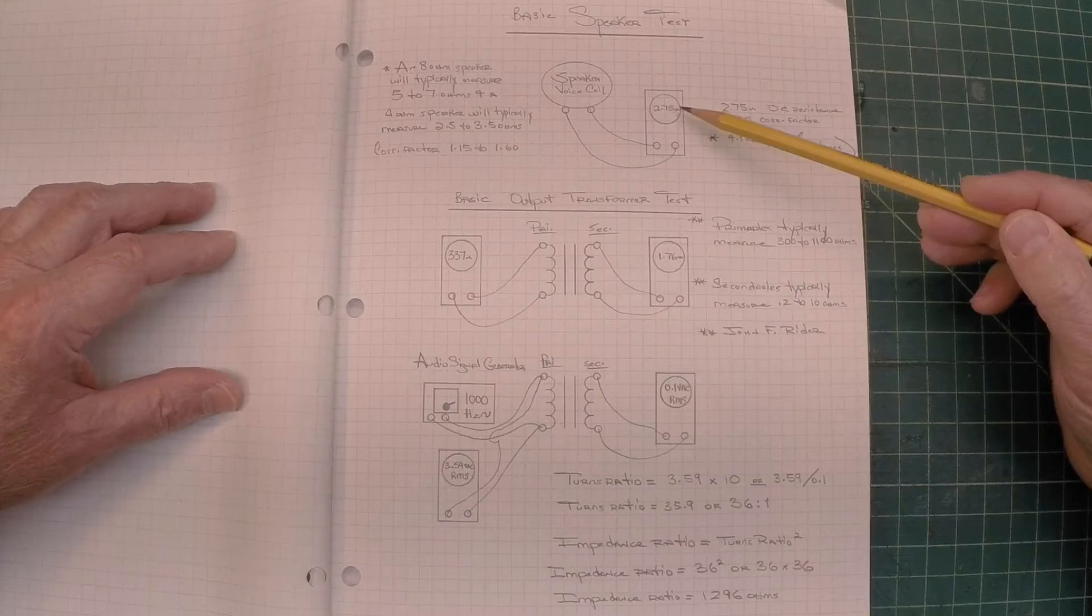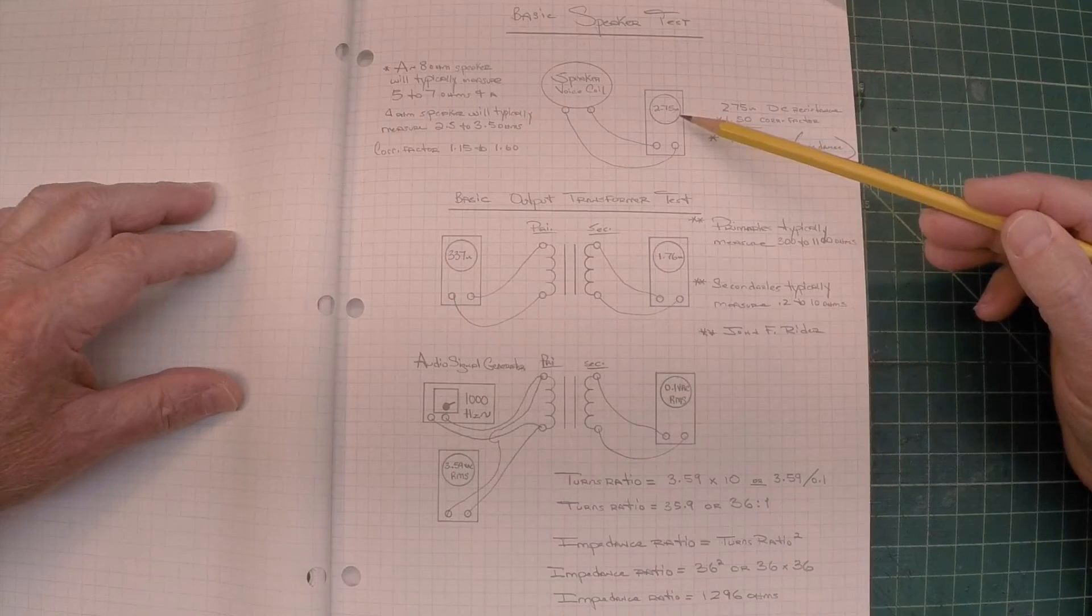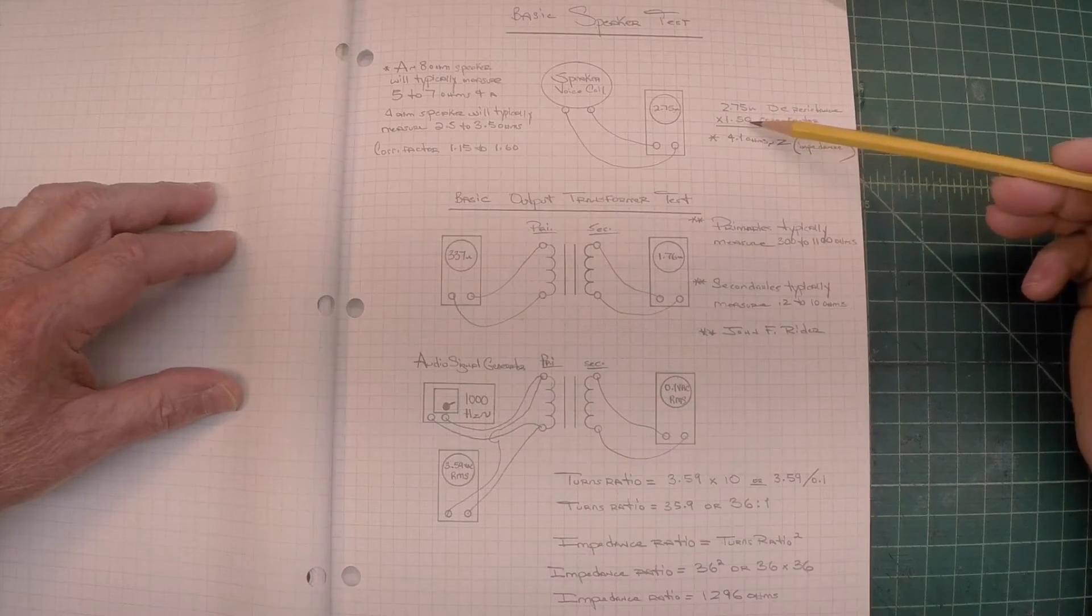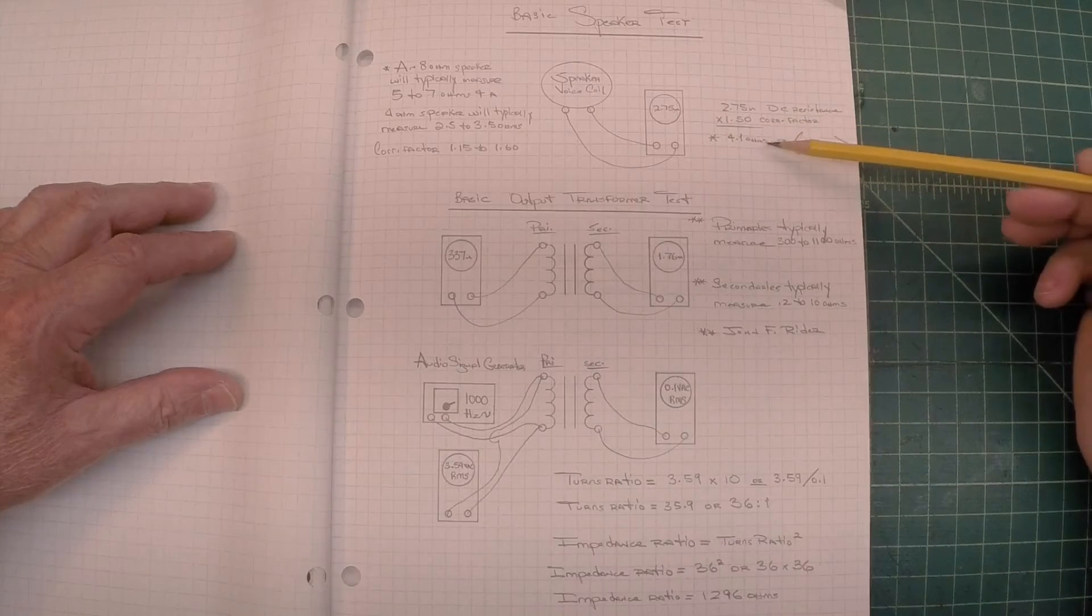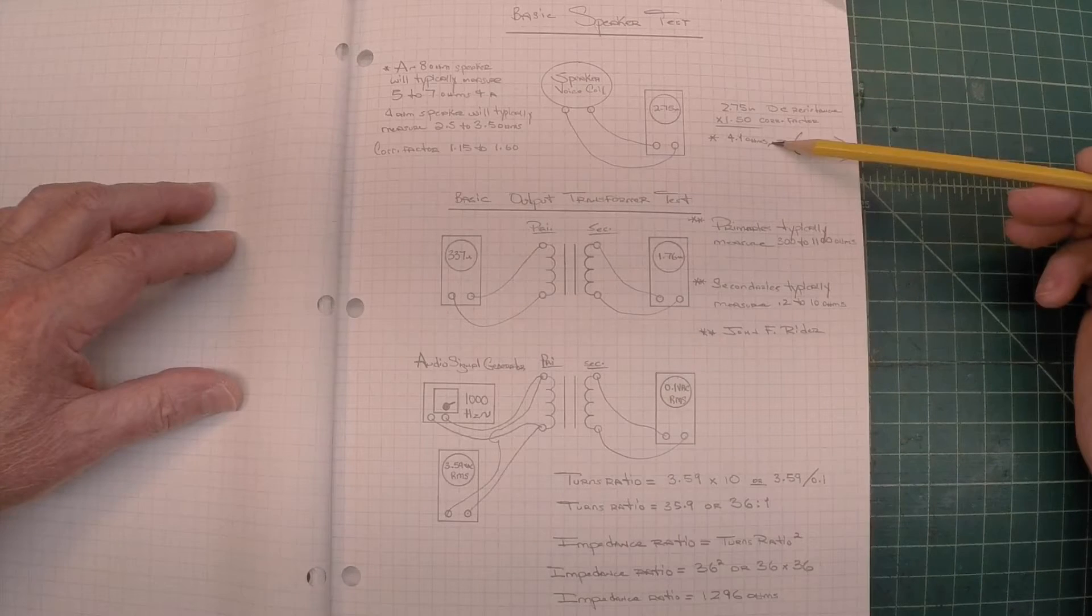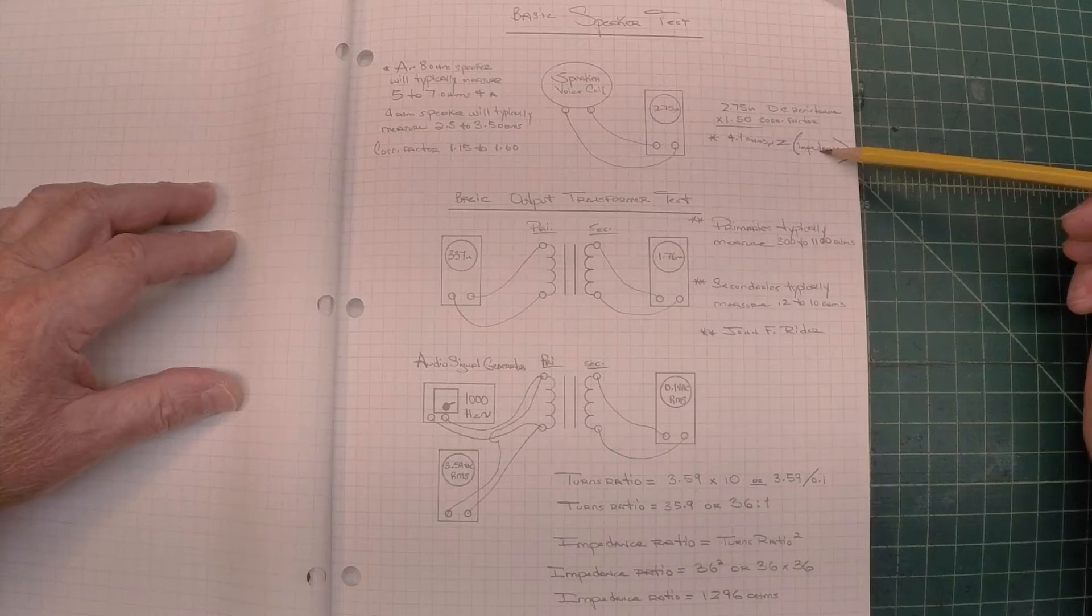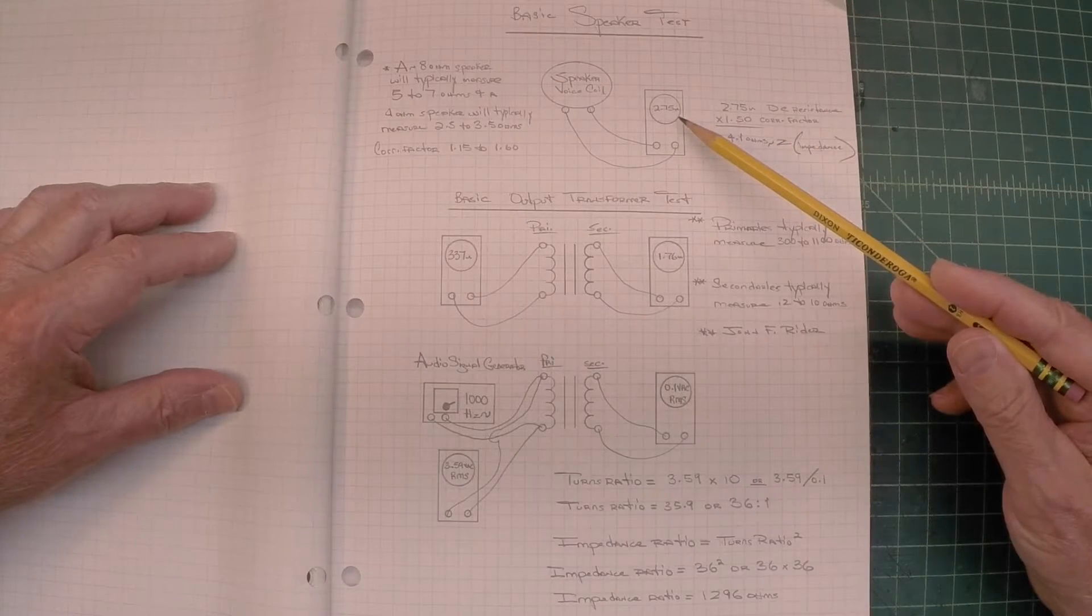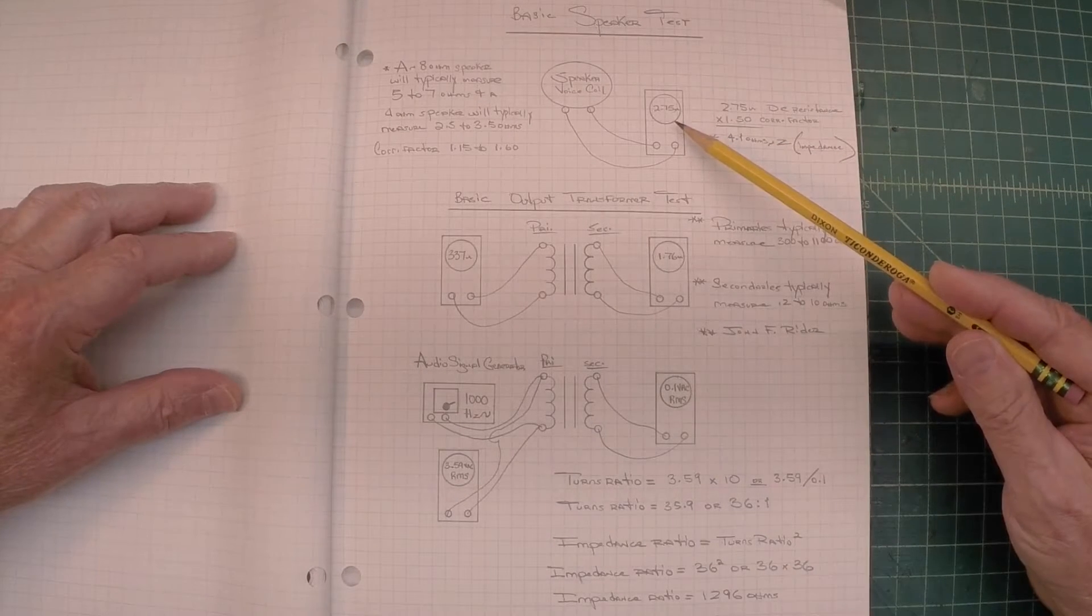So looking at the speaker that's placed in the cabinet today at 2.75 ohms, I believe that to be roughly a 4 ohm speaker impedance-wise. So we're good there. It's not open, so we know the voice coil is good.